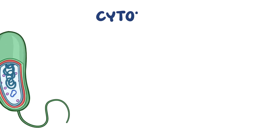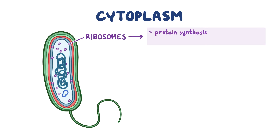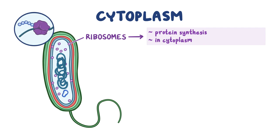In the bacterial cytoplasm, there are scattered cell components such as ribosomes, which are the sites of protein synthesis. These ribosomes can be found spread all over the cytoplasm, where they produce proteins that are destined to remain inside the cell, or they can be attached to the plasma membrane — called plasma membrane-associated ribosomes — and in this case they make proteins that will reside in the cell envelope or get transported outside the cell.